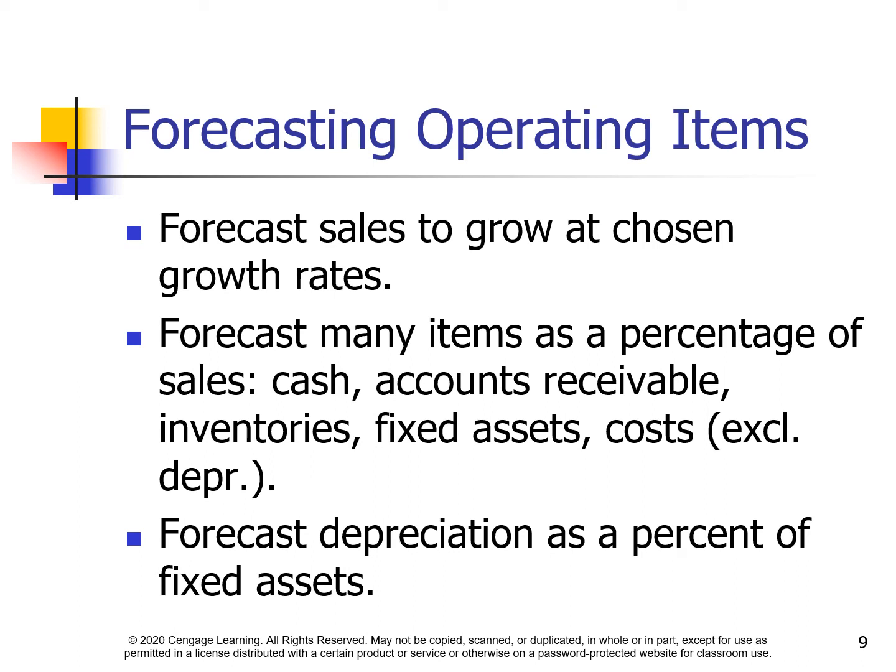When forecasting operating items, forecast sales to grow at chosen growth rates. Forecast many items as a percentage of sales — for example, cash, accounts receivable, inventories, fixed assets, and costs excluding depreciation. Depreciation is forecasted as a percent of fixed assets.